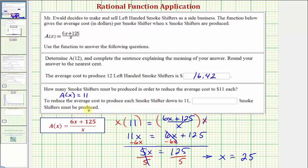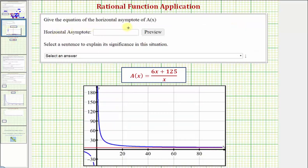Which means to reduce the average cost to produce each smoke shifter to 11 dollars, 25 smoke shifters must be produced. Of course, this should be 11 dollars. Now we have one more question. We want to find the equation of the horizontal asymptote of A of x. A horizontal asymptote is a horizontal line that our function will approach as x increases, or decreases, without bound.